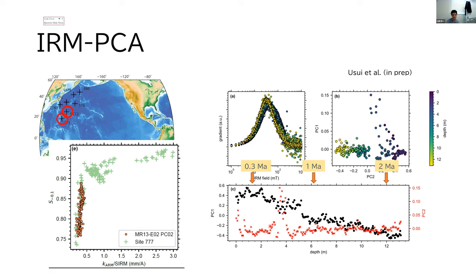Paleomagnetism gives these age constraints. So the data from this site also supports that from around 2 Ma, there is an increasing contribution of the higher coercivity terrigenous component against the lower coercivity terrigenous component.